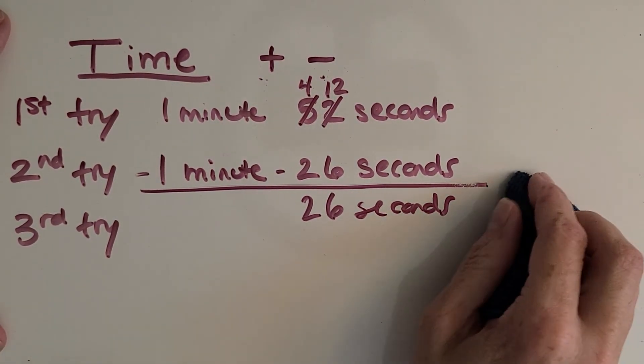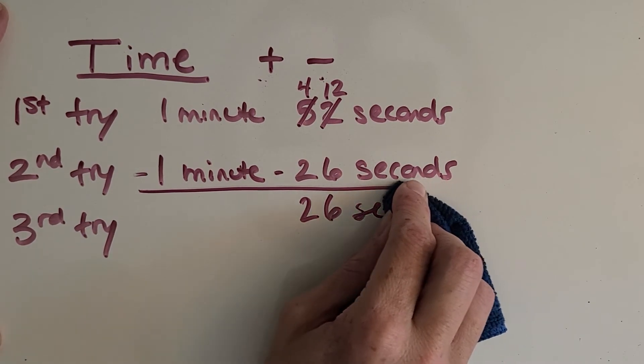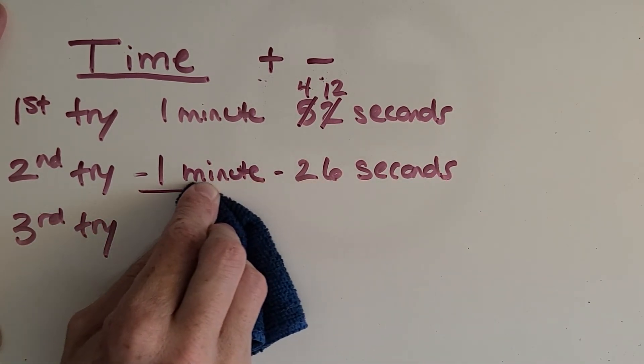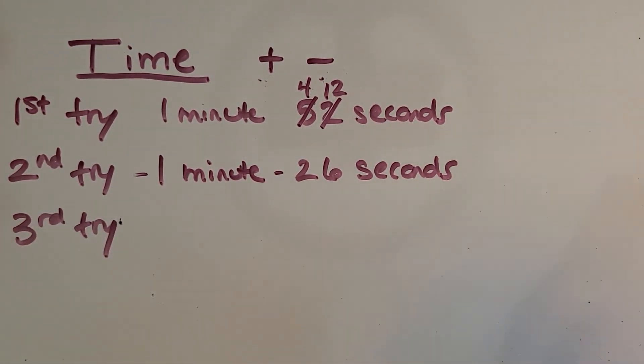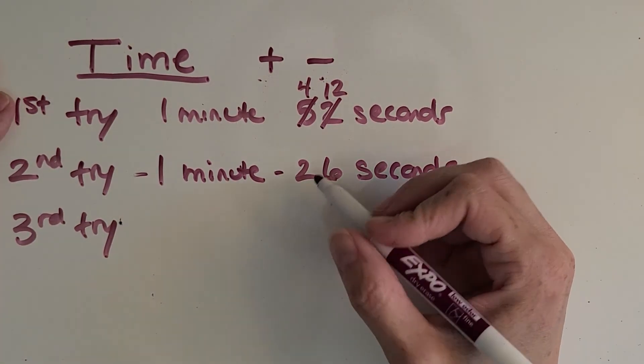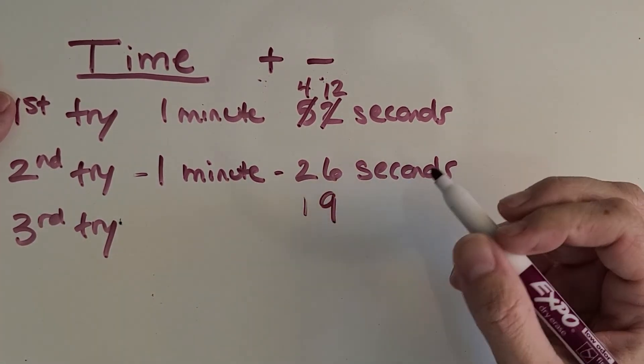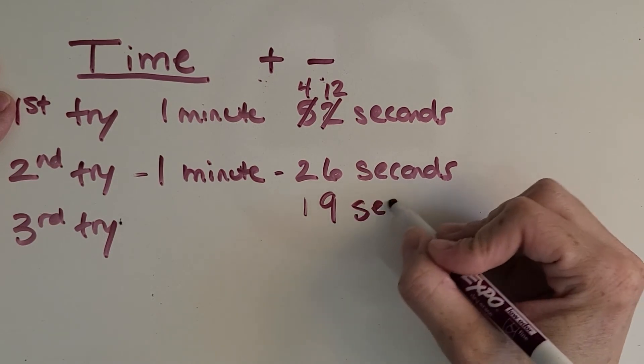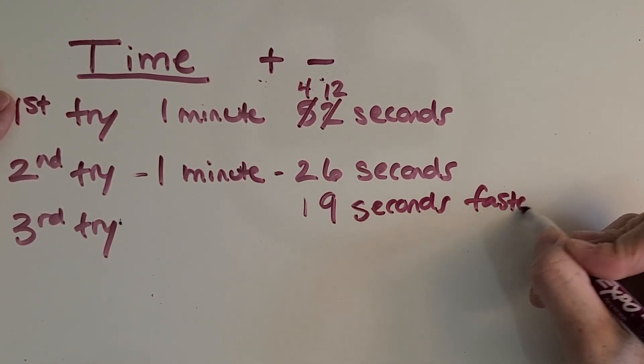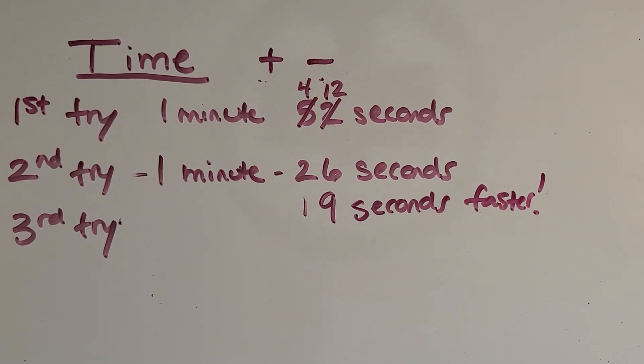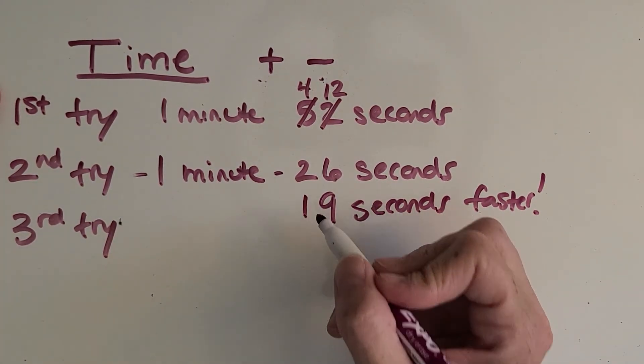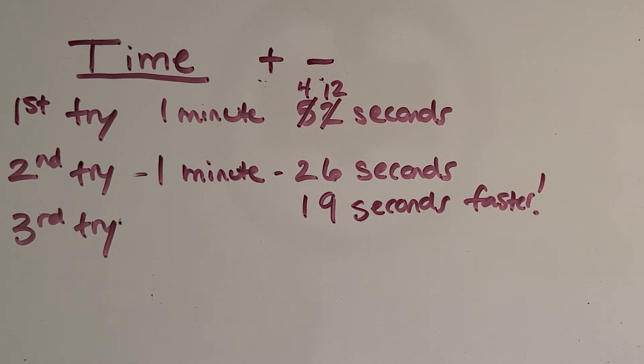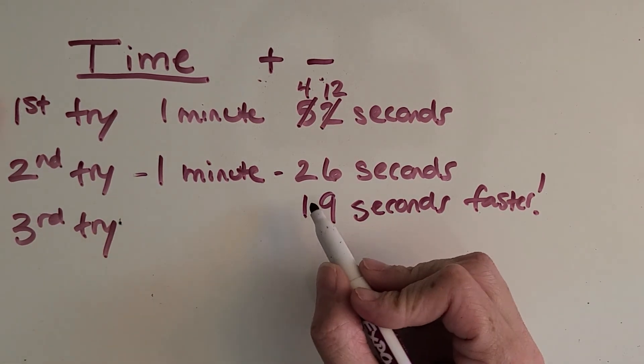Okay. Now I left the third try a mystery because I want you to figure out my time. I went 19 seconds faster. I just kept getting better and better. So now I want you to tell me what was my third try, if it's 19 seconds faster. Okay. Pause the video and help me figure it out. All right. Let's check your work.